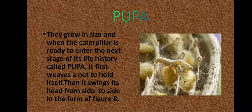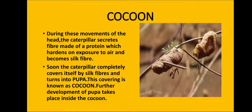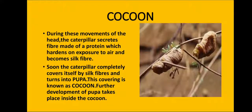After forming the net, the caterpillar swings its head from one side to the other in the form of a figure eight. During these movements, the caterpillar secretes a fiber made of protein. That fiber hardens on exposure to air and becomes silk fiber. Slowly, the caterpillar completely covers itself with these silk fibers.